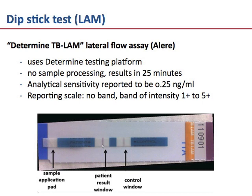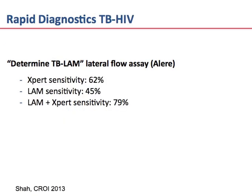It is highly reliable, with a sensitivity of over 50% in the CD4 stratum from 50 to 100. This is a very promising point-of-care test, particularly when combined with smear. In smear negative pulmonary TB cases, GeneXpert has a sensitivity of 62%, urine LAM has a sensitivity of 45%, and if you combine LAM and GeneXpert, you have a combined sensitivity of 79%.